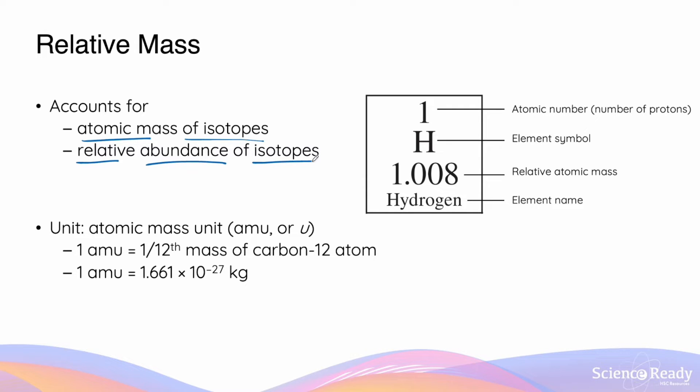We are not simply calculating the average of the isotope masses, but we are actually calculating the masses after considering how abundant each isotope is. Relative atomic mass of an element can be easily identified on the periodic table as the number with decimal places below the element symbol or atomic number. So the relative atomic mass of hydrogen is 1.008.